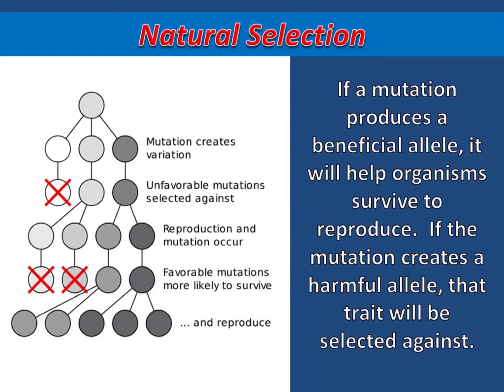If a mutation produces a beneficial allele, it will help organisms survive to reproduce. If the mutation creates a harmful allele, that trait will be selected against, meaning those organisms with the harmful allele are more likely to die before they reproduce.